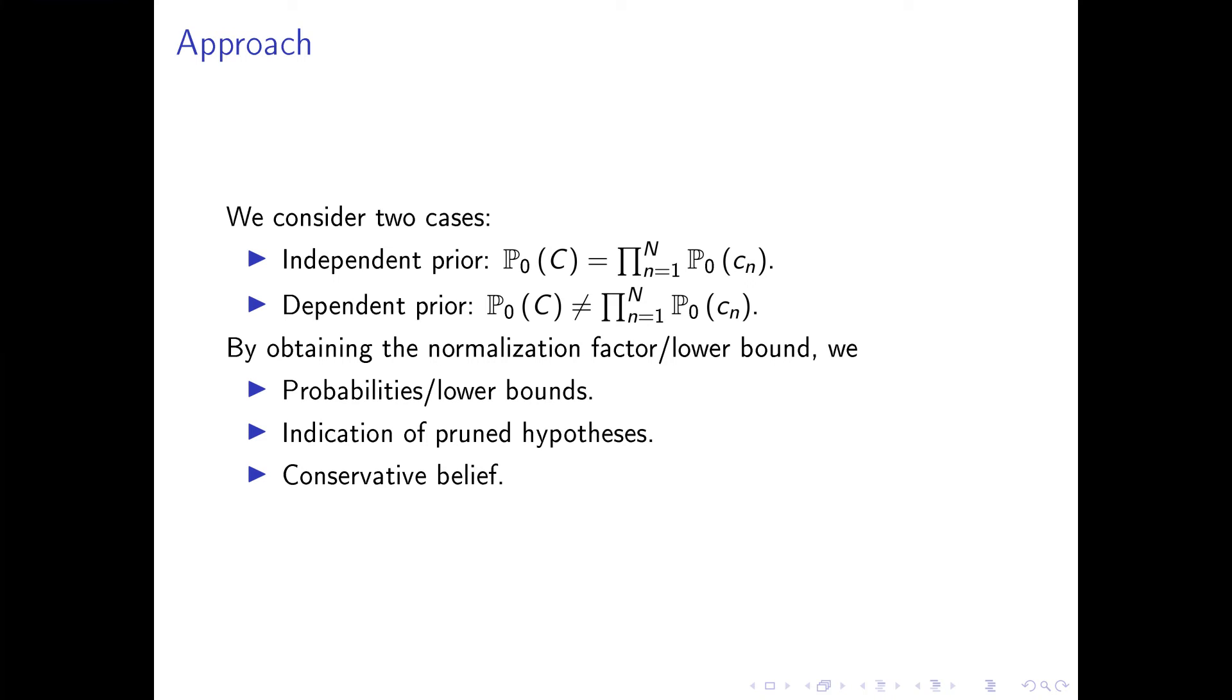And if we have a lower bound, then we have a lower bound on the probabilities. This also gives us the indication that the pruned hypotheses have a good probability.